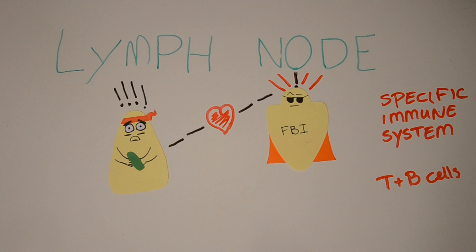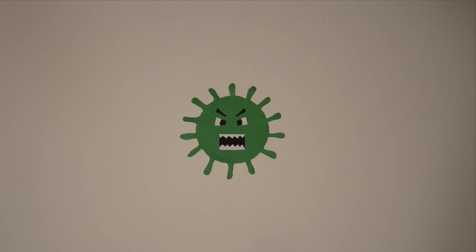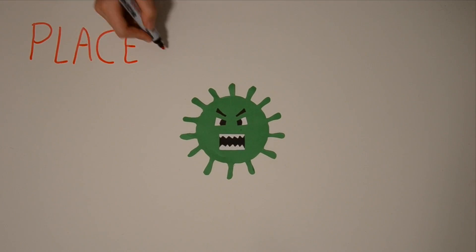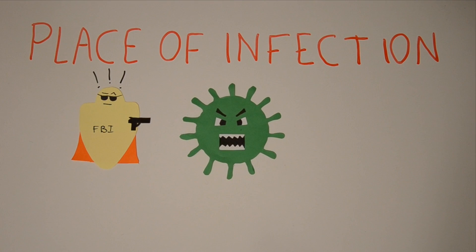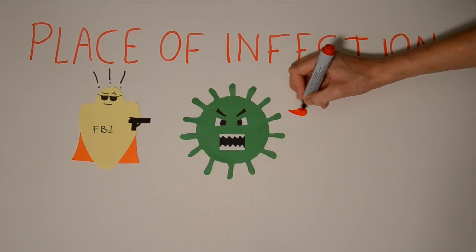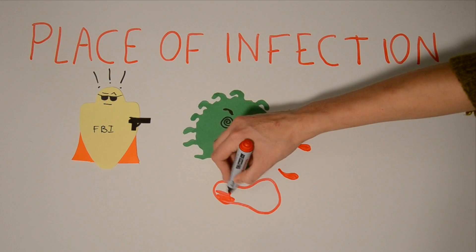But when it's found, the conquering of the pathogen can start. The cells of the specific immune system that have been recruited by the reporter cells go to the place of infection. At the place of infection, they recognize and then specifically kill the pathogen. However, in the meantime, you've been sick for quite a while.